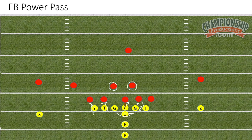Typically, our fullback and running back are responsible for the front side edge player, the 5-technique. In this case, however, the fullback is going to release into the play side flats and look for the ball immediately. He should then communicate to the running back, "solo," which tells the running back that he no longer has the assistance of the fullback.